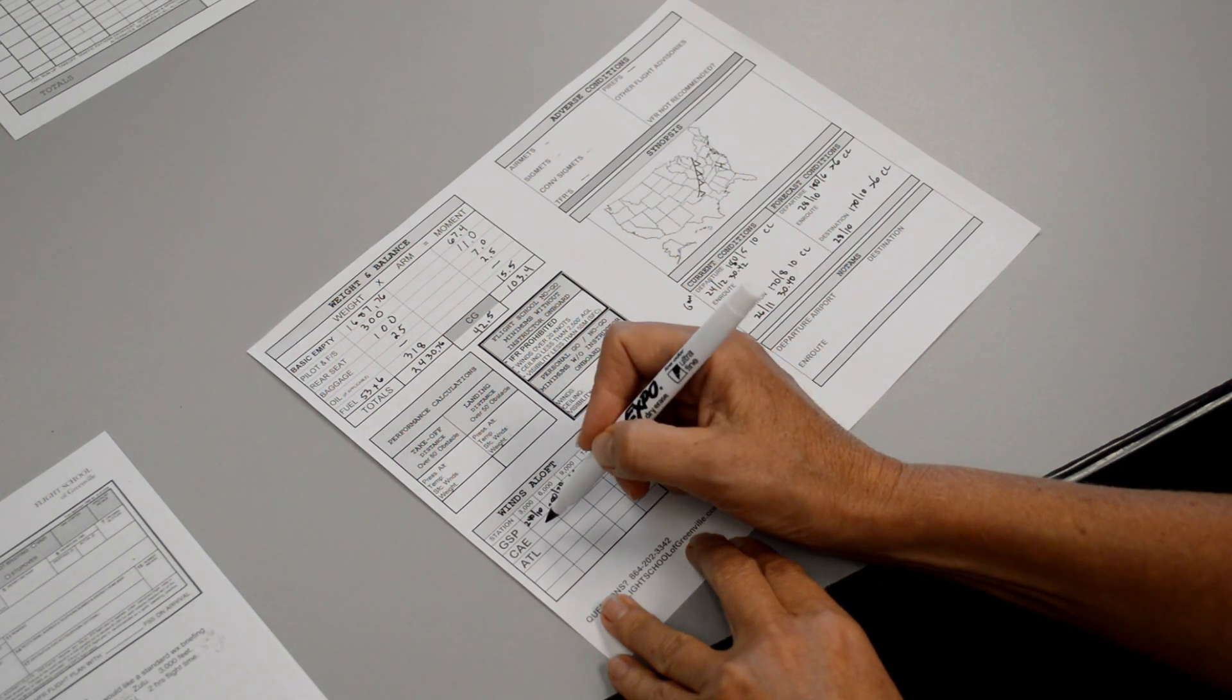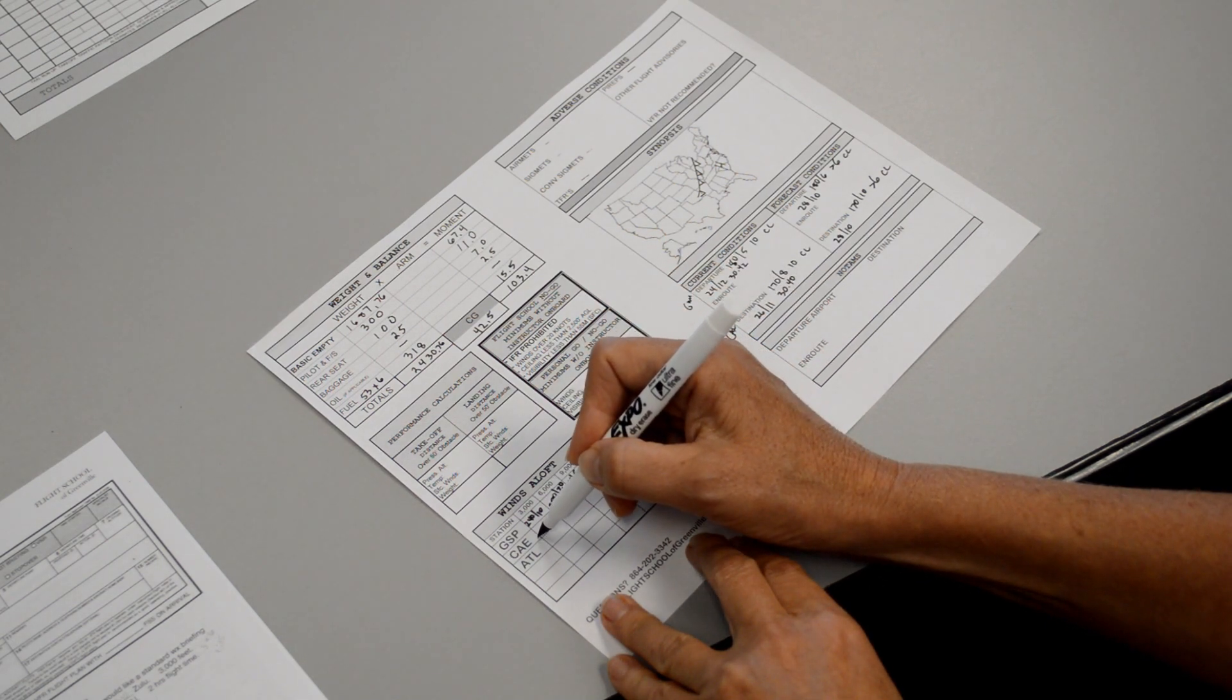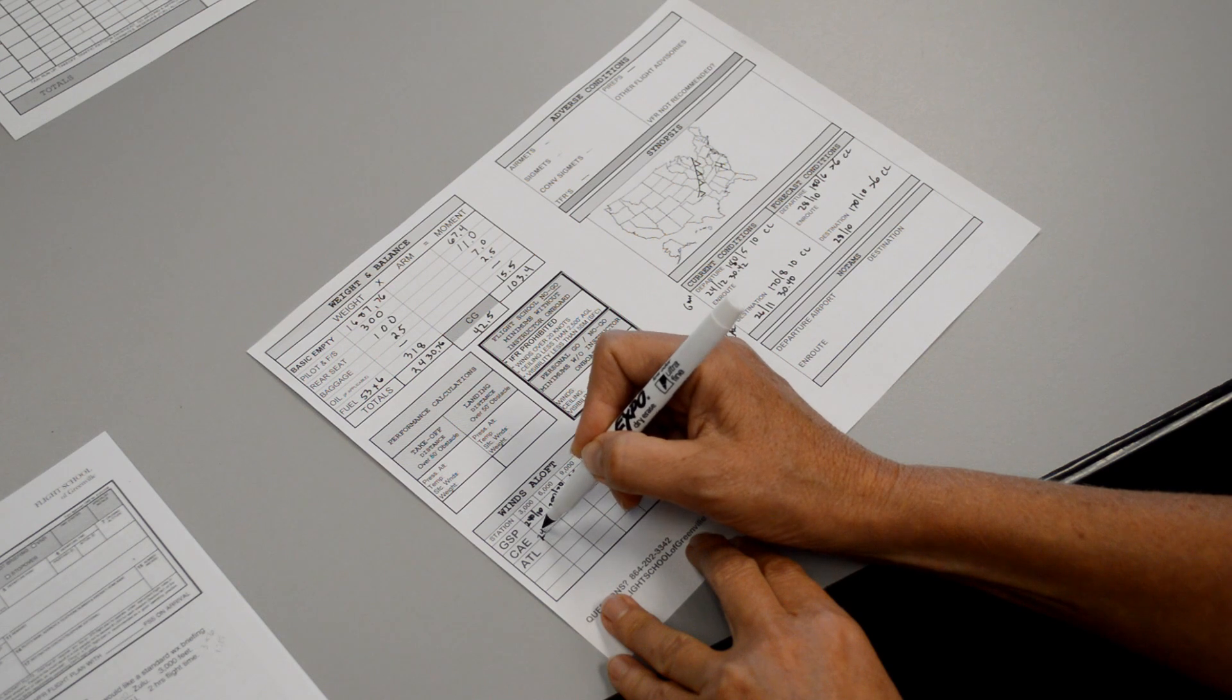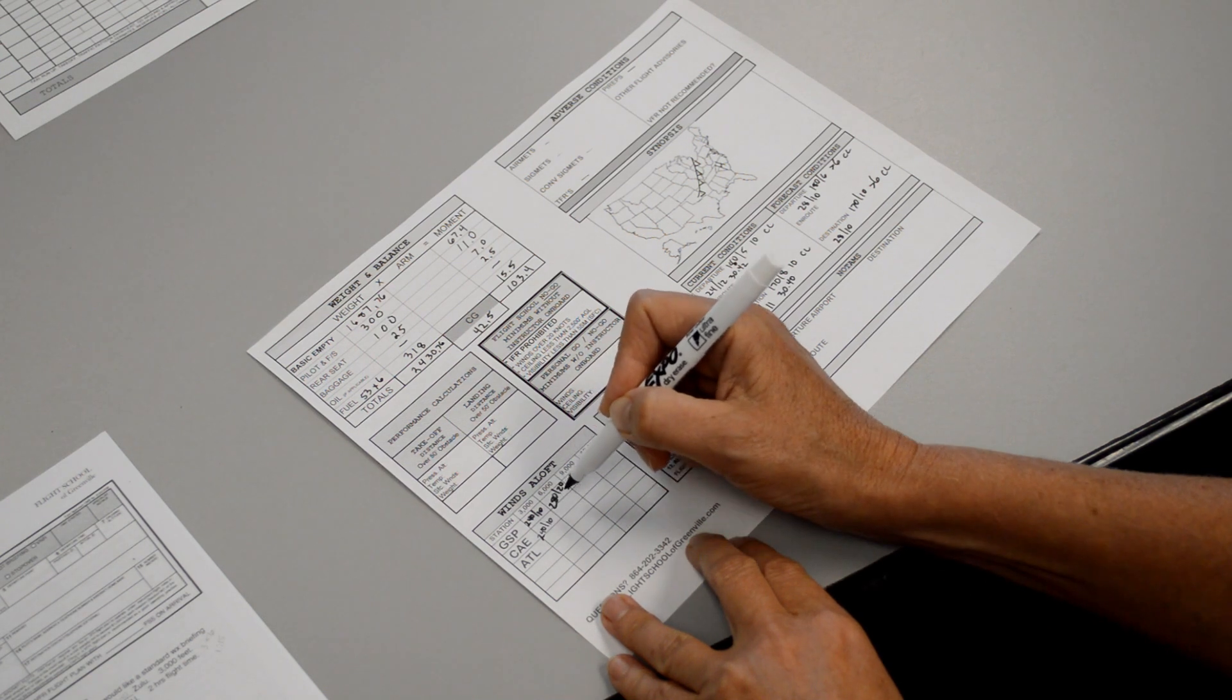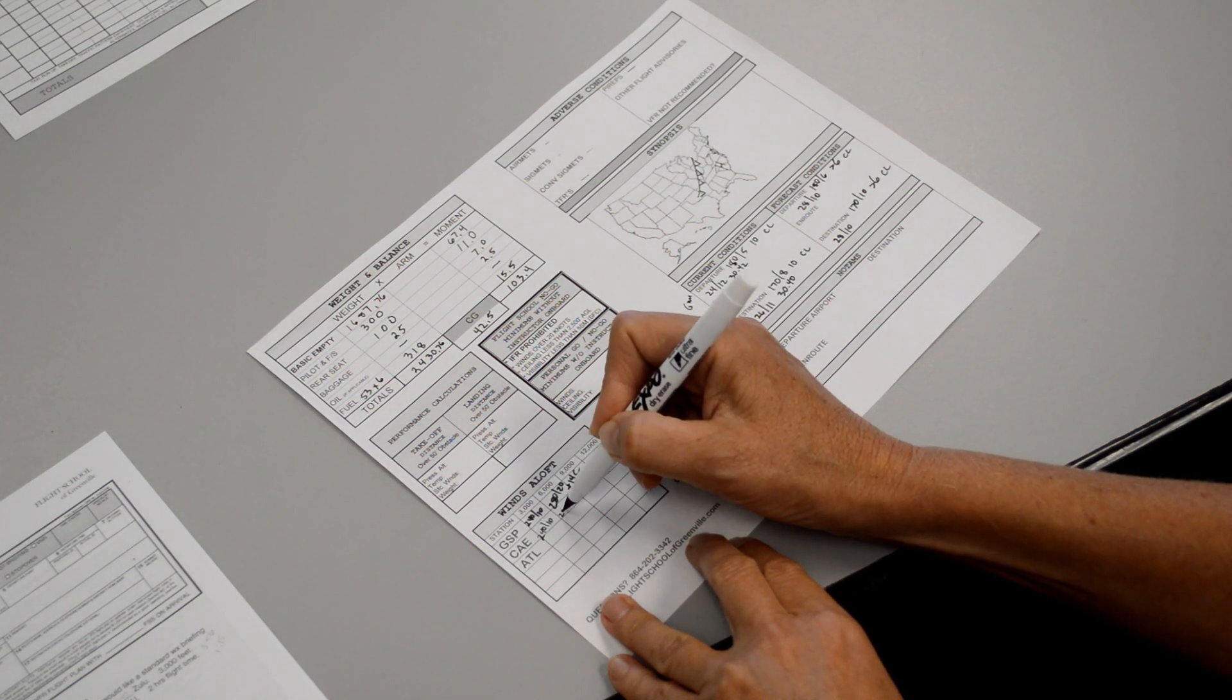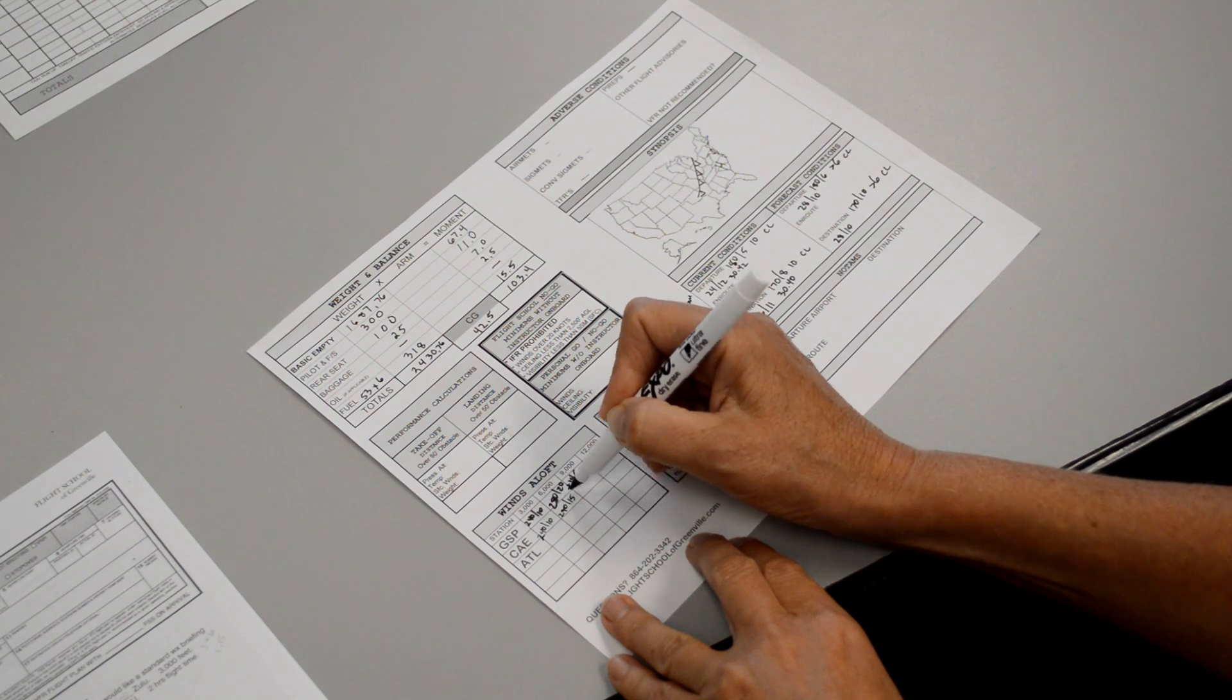At Charlie Alpha Echo, Columbia, the wind 3,000, 240 at 10. And at 6,000, 290 at 15. Temperature plus 15 degrees Celsius.